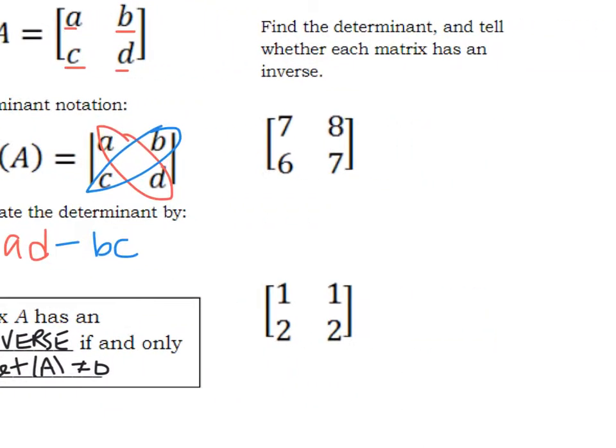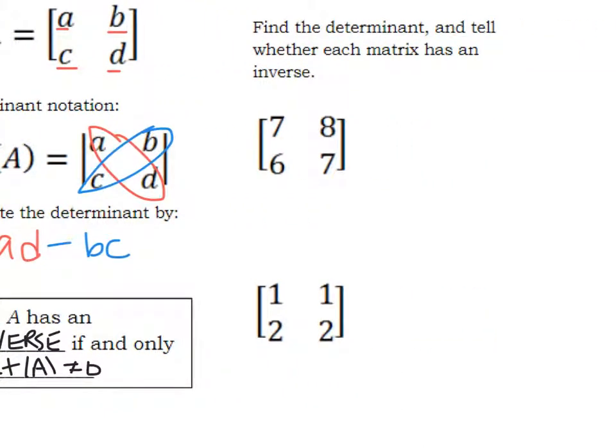So let's practice whether we have an inverse over here and find our determinants. So for the first one, we have 7 times 7. I'm going to write it out, but obviously some of you could just do this in your head. Minus 6 times 8.